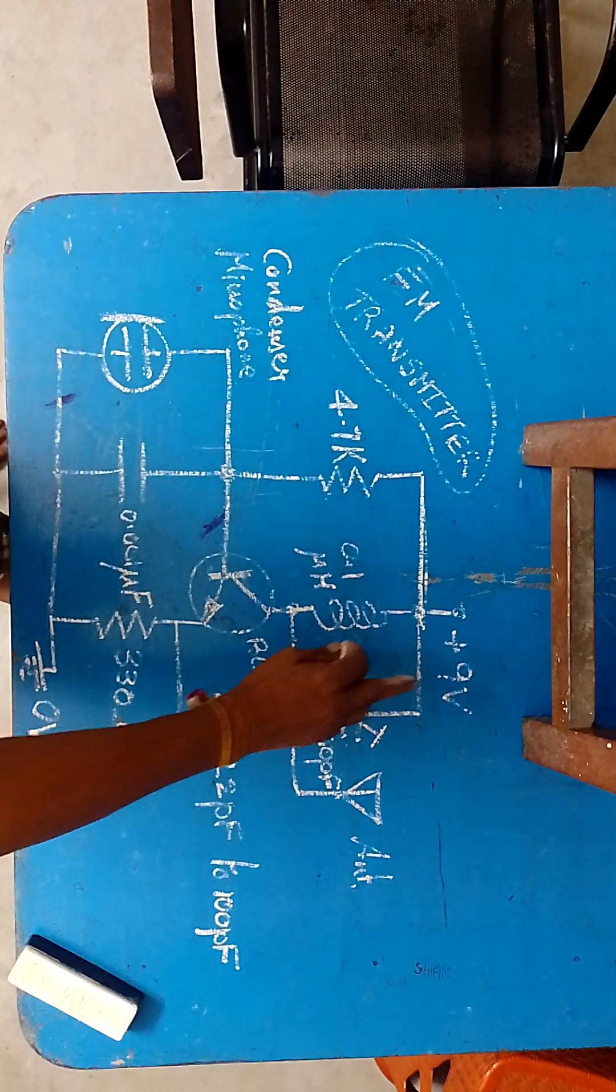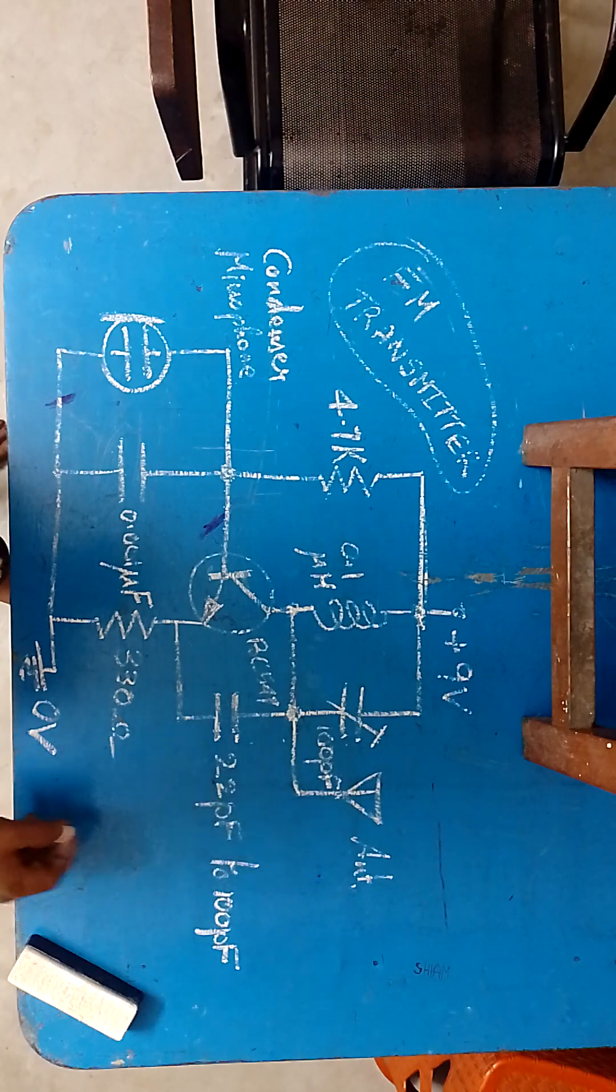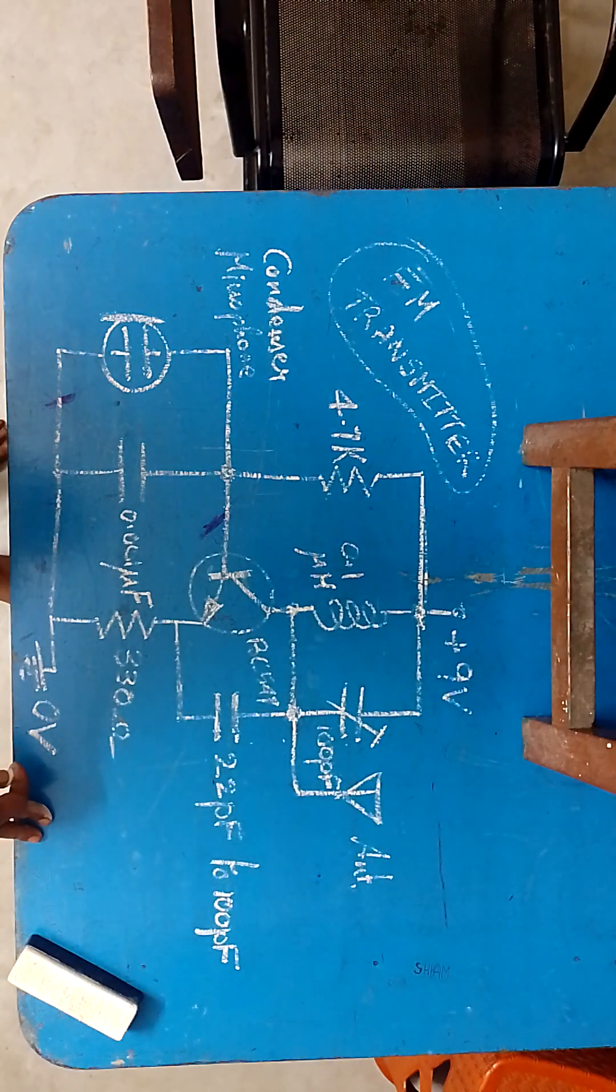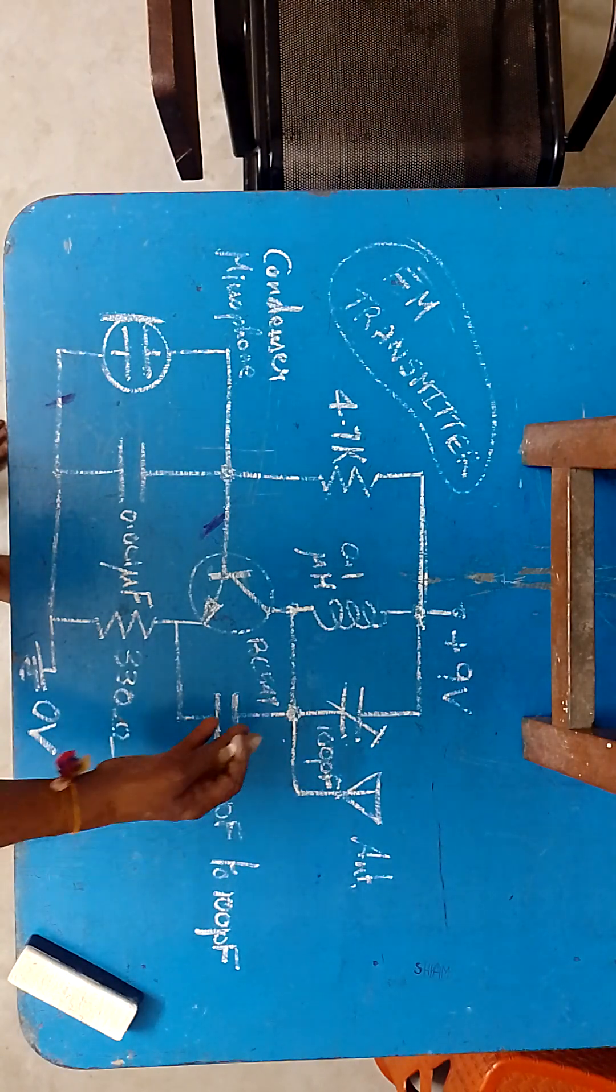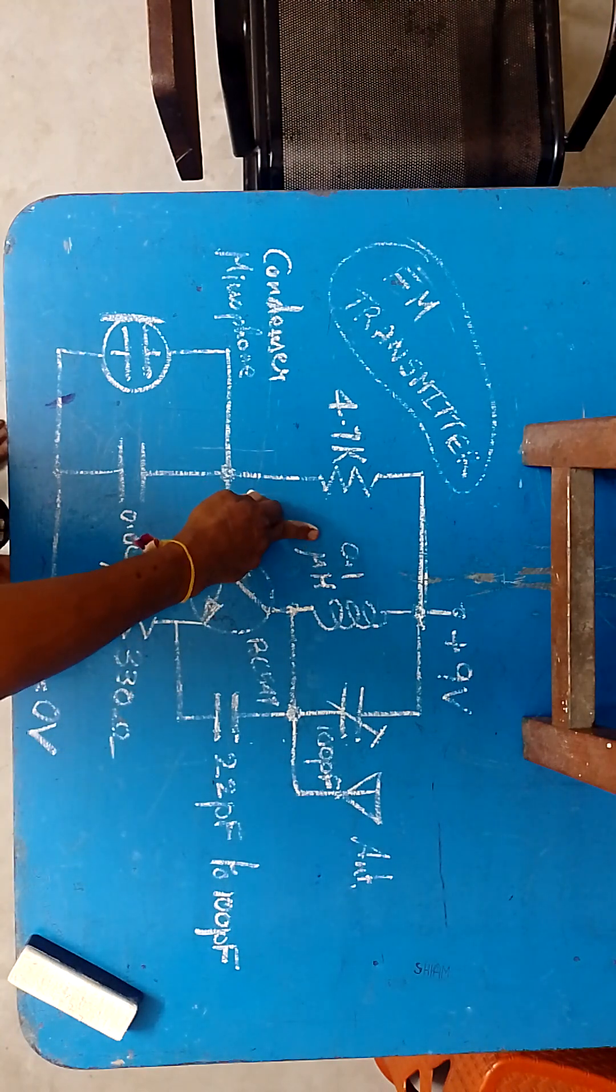The entire circuit operates with 9 volts DC. And you connect a short antenna roughly 50 centimeter length antenna. And you can design this inductor with air core coil design method.